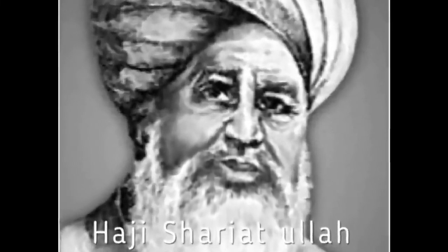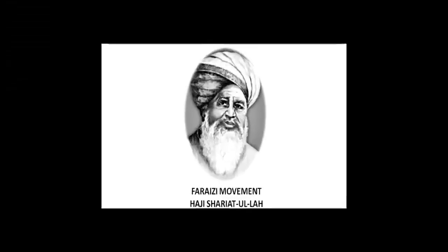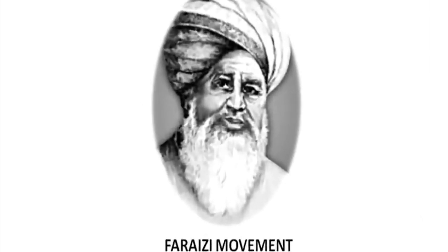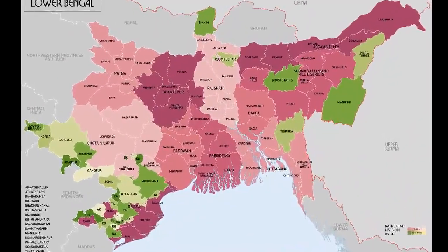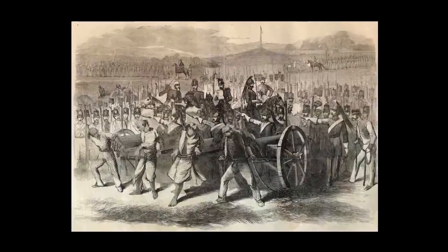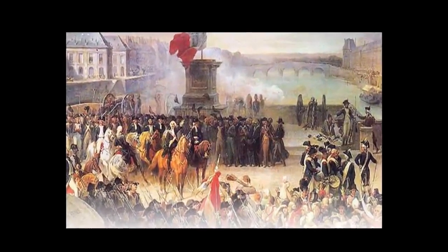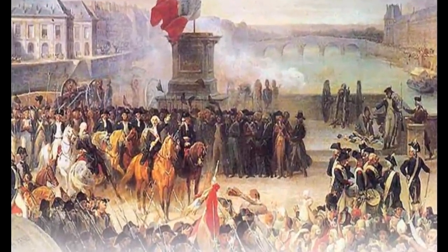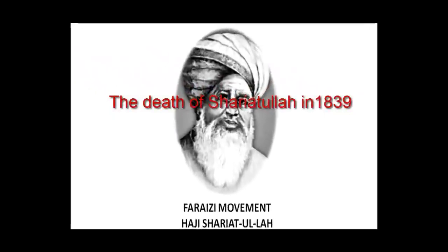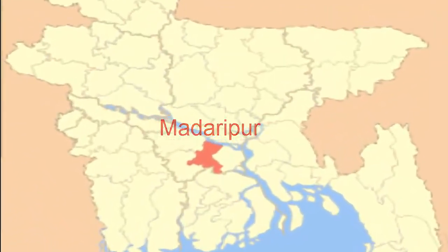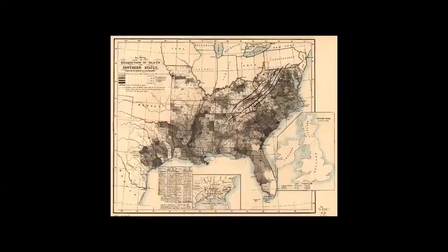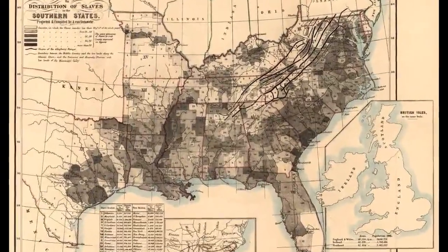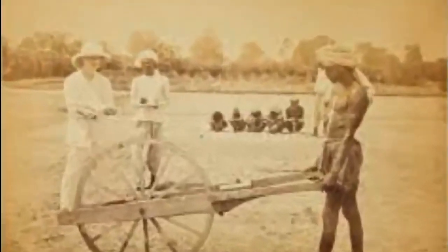The Farazi movement, launched by Haji Shariat Allah in 1818 in eastern Bengal, advocated participants to abstain from non-Islamic activities. This brought him into direct conflict with the Zamindars and subsequently with the British, who favored the Zamindars to suppress the peasant uprising. After the death of Shariat Allah in 1839, the rebellion was led by his son Dudu Miyan, who called upon the peasants not to pay tax, declaring that land belongs to God.